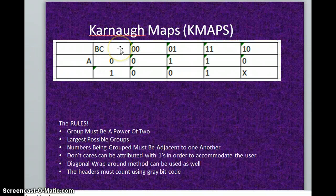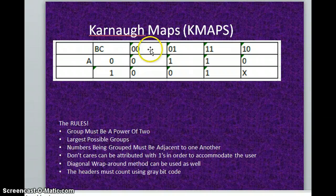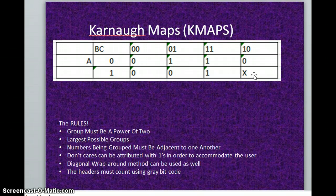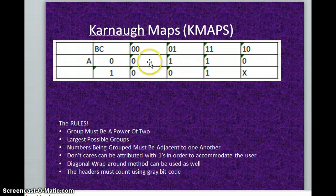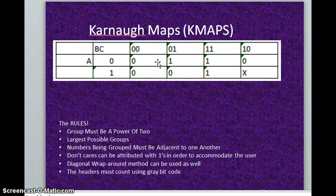Now there are rules for how to group. The first rule is that if you're making a group, the size must be a power of two. It can either be two, or one, or four, but it can't be three, six, or ten. It has to be a power of two: two to the zero is one, two to the one is two, two to the two is four, and two to the three would be all eight. There are obviously larger K-maps with bigger powers, but we're not going to cover those today.